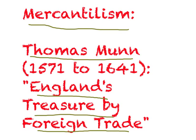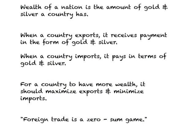Their basic argument in mercantilism is that you can become better off by making someone worse off. For example, if I want to become rich, I can only do so by exploiting others. This general thinking was also extended to foreign trade. According to mercantilists, the wealth of a nation is the amount of gold and silver a country has — the more wealth it has, the stronger armies it can support.